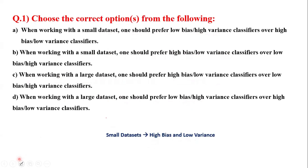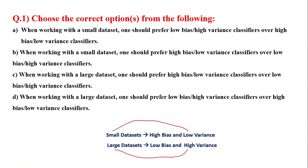For small datasets: low variance. For large datasets: high variance. Bias will automatically be the opposite of variance — if low variance, then high bias; if high variance, then low bias. So for small datasets, low variance and high bias is preferred. And option D states that when working with a large dataset, one should prefer low bias and high variance over high bias and low variance. So B and D are the correct options.